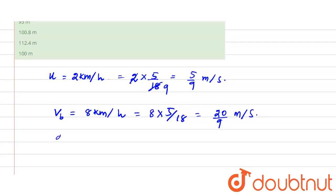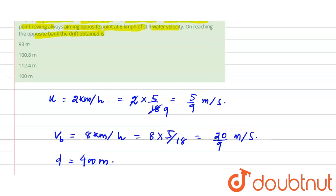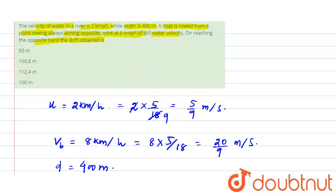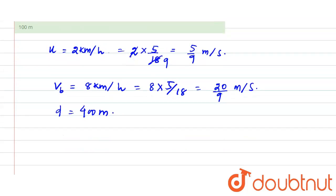The width d is equal to 400 meters. Now we have to calculate the time to reach the opposite bank. The time t is equal to d divided by vb.